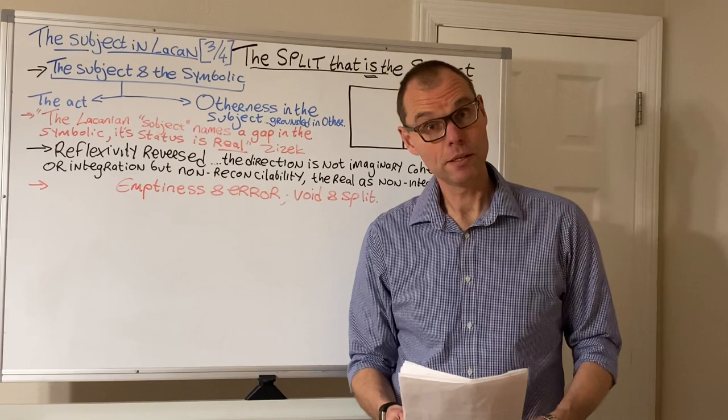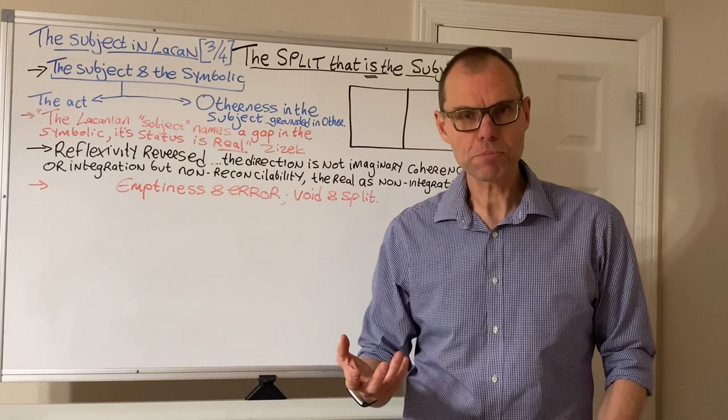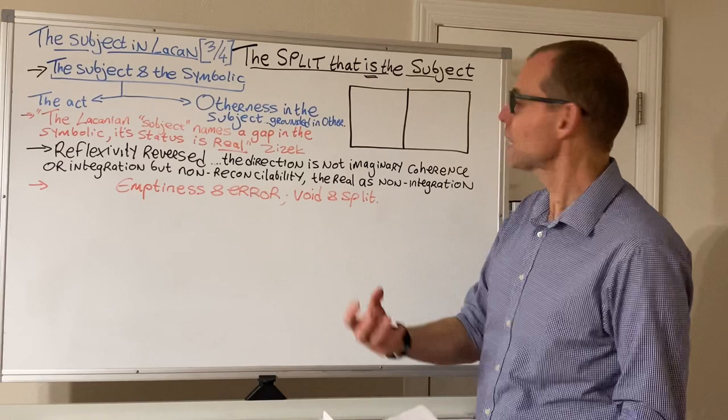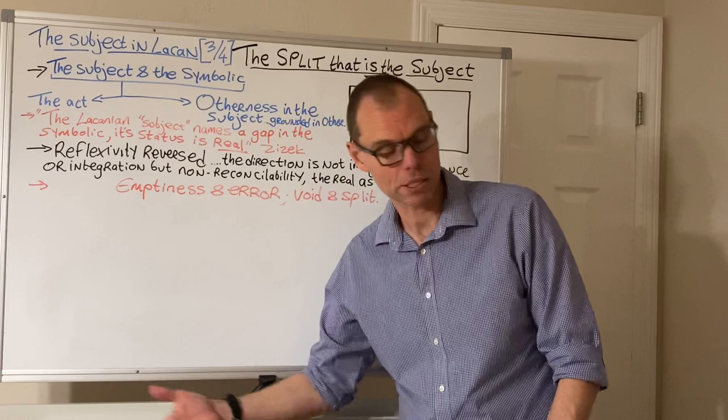We're resuming our series of lectures on the subject in Lacan. Our opening statement today is this idea that the split is the subject. When we're thinking about this notion of the subject, there's always a tendency to foreground the subject as opposed to those contingent and circumstantial events around the subject, but here we're doing a kind of reversal. We're emphasizing that the ontology, the thing we're really going to focus on here, is split — that becomes subject.